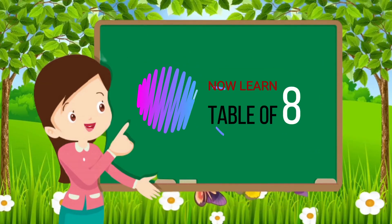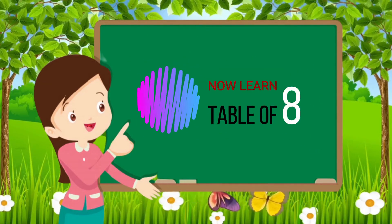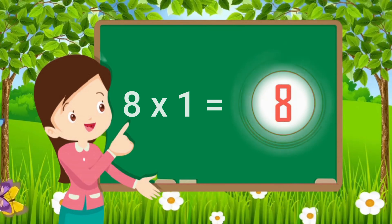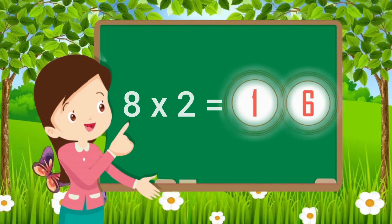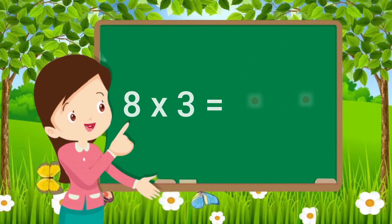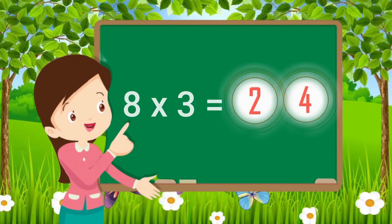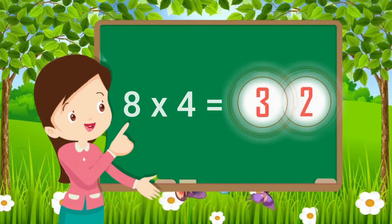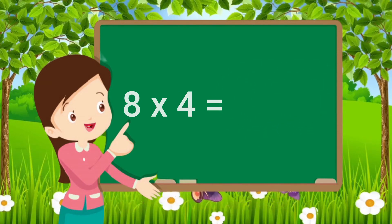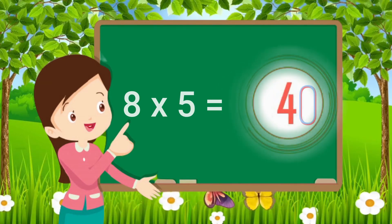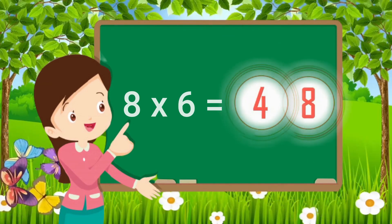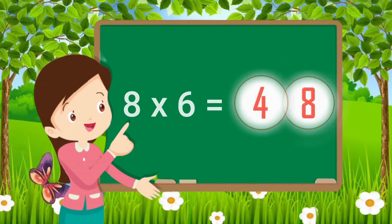Now learn table of eight. Eight ones are eight. Eight twos are sixteen. Eight threes are twenty-four. Eight fours are thirty-two. Eight fives are forty. Eight sixes are forty-eight.